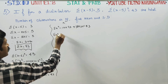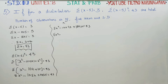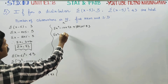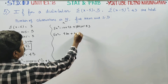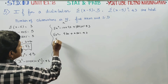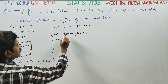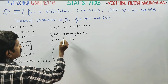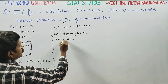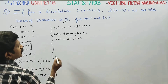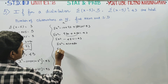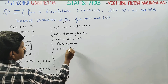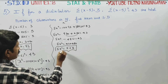So sigma x squared equals 43 plus 10 into sigma x minus 25n. We substitute: 10 into 93 gives 930, and 18 into 25 gives 450. So sigma x squared equals 43 plus 930 minus 450, which equals 523. That is our value of sigma x squared.